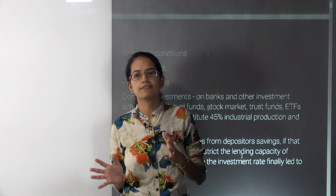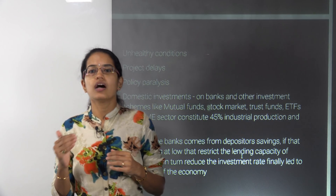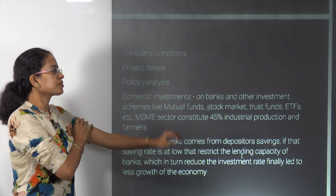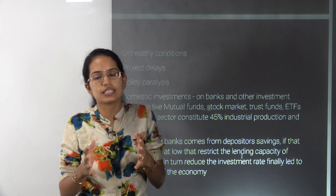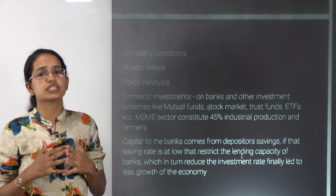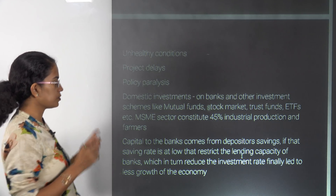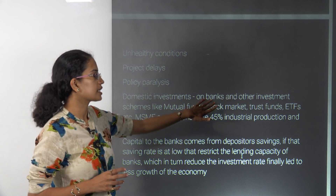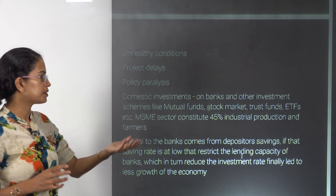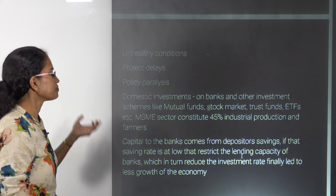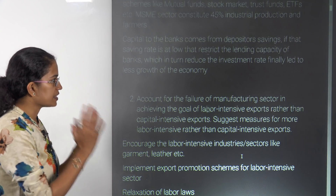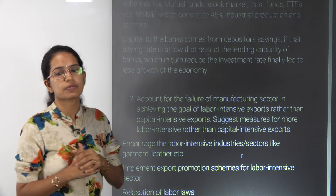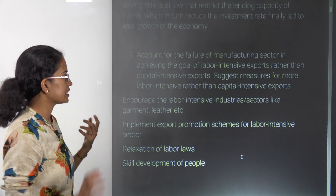Despite these factors, Indian infrastructure faces issues like monsoon failures and crop failures affecting agro-allied industries, as well as delays in projects and policy paralysis — where policies are released but show very gradual implementation. We also need to focus on investments, both domestic and foreign. Domestic investments include banks, mutual funds, stock markets, and ETFs. Bringing in foreign investment drives into India are major parameters to address.